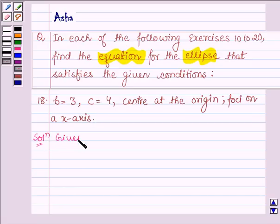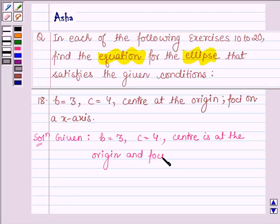And here we are given that b is equal to 3, c is equal to 4, and center is at the origin and foci on the x-axis.